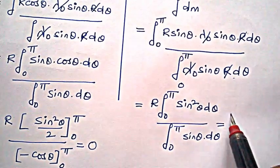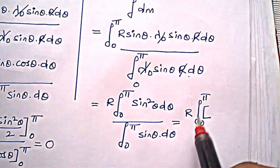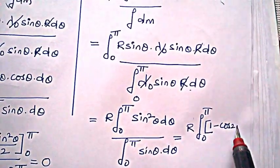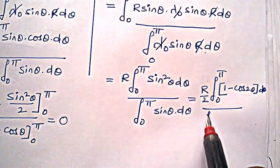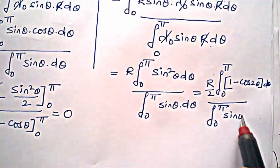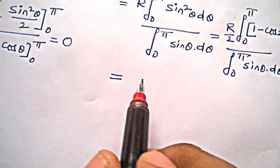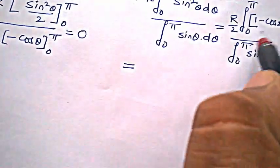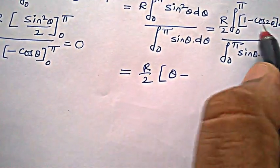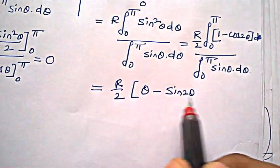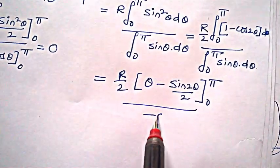We write sin²θ = (1 − cos2θ)/2, so the numerator becomes r/2 · ∫₀^π (1 − cos2θ) dθ. Integrating: [θ − sin2θ/2] from 0 to π. The denominator integral is ∫₀^π sinθ dθ = [−cosθ] from 0 to π.